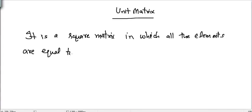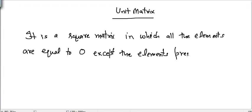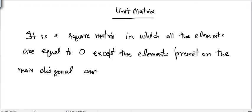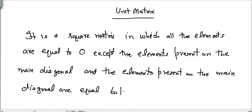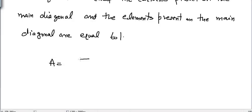All the elements present on the main diagonal are equal to 1. So let's take an example of a unit matrix. Here, if I write A equal to one zero zero one...